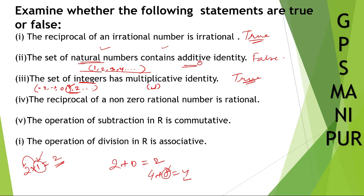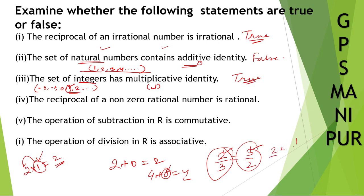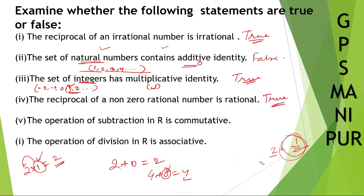Question number 4: the reciprocal of a non-zero rational number is rational. Take any rational number — suppose 2 by 3 — and you take the reciprocal, that is 3 by 2. So this is rational, and this is also rational. Or take 2, then the reciprocal of 2 is 1 by 2, which we can write in this form. So we can say this is also true.